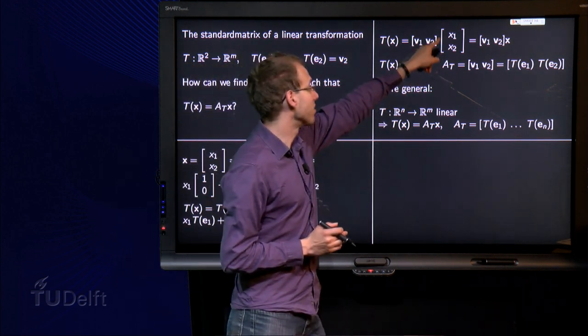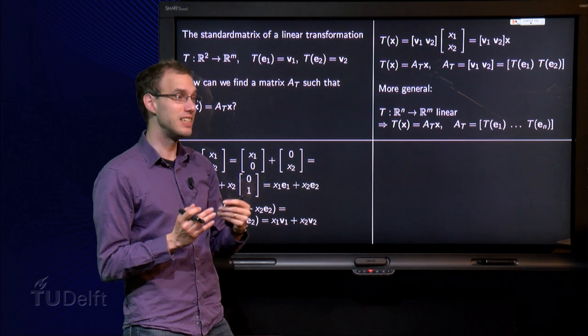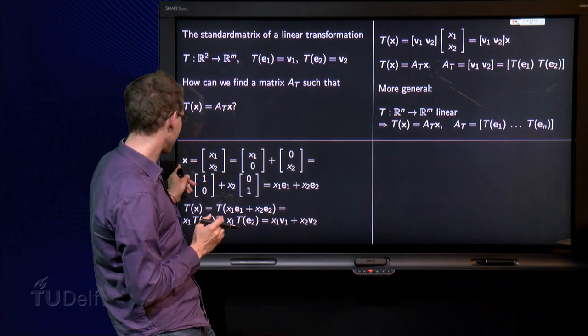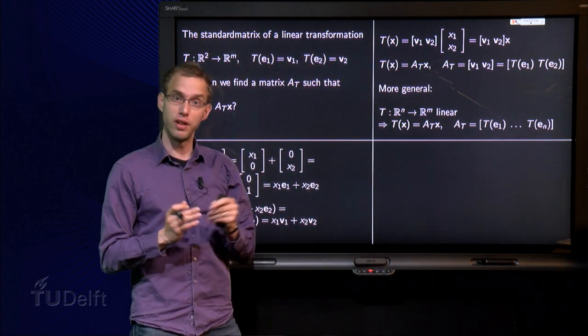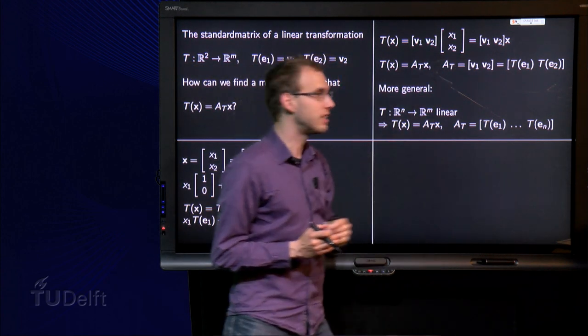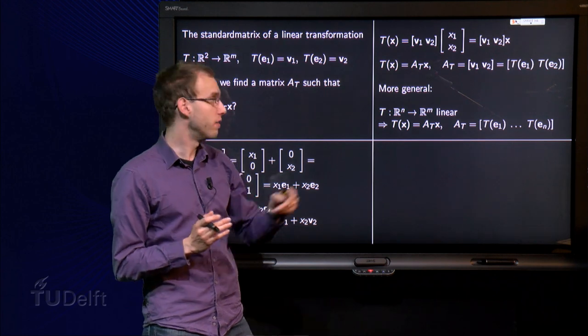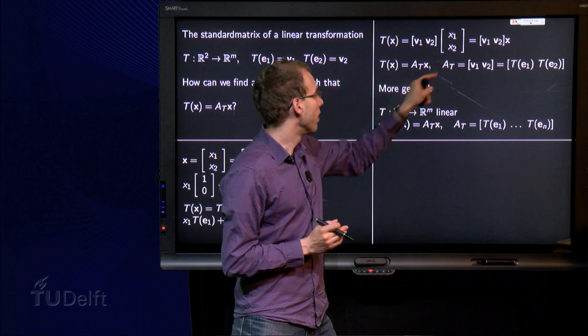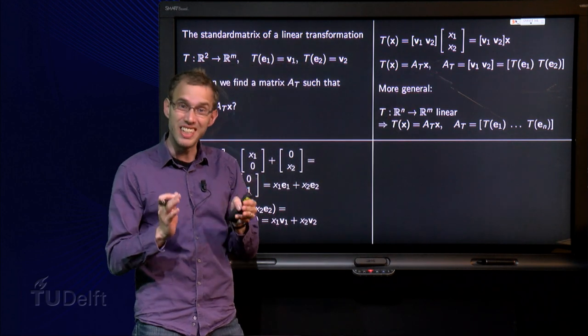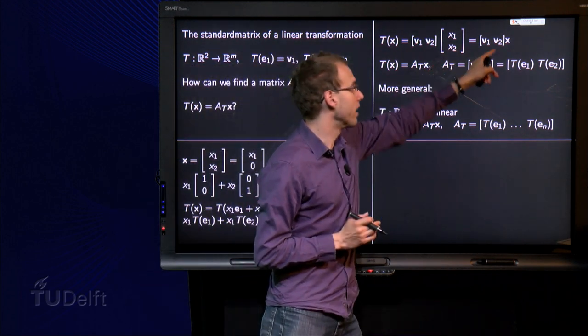So T of X equals matrix consisting of V1 and V2 times the vector containing X1 and X2. But the vector containing X1 and X2 was exactly the same as our original vector X. So T of X equals matrix V1 and V2 times X, so our T of X is AT times X where AT consists of the vectors V1 and V2.